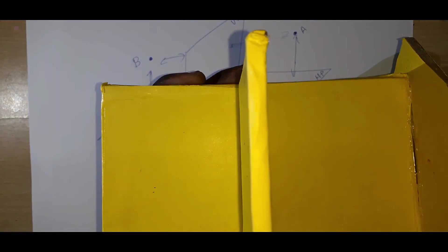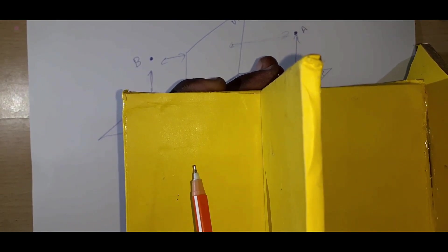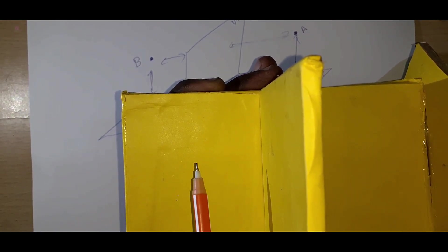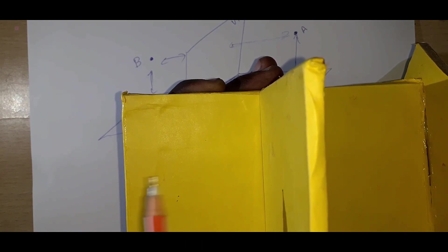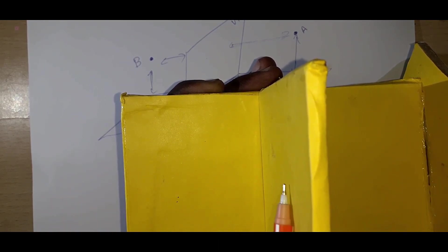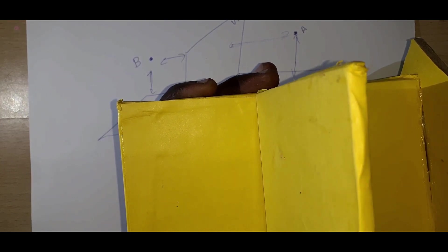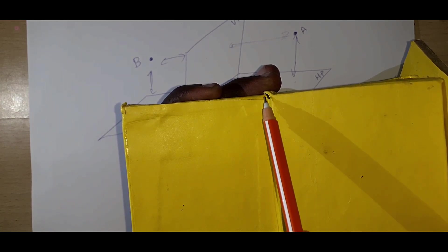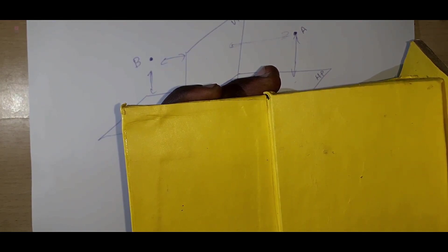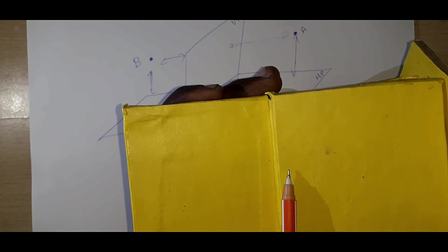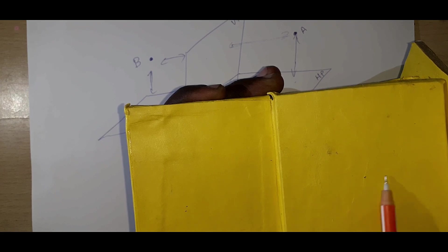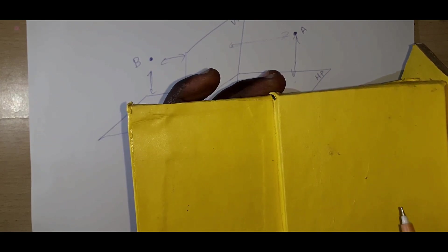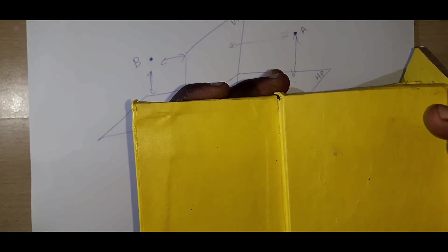The front view portion can be seen here. For the top view, we tilt it 90 degrees clockwise, and the same object gets projected there. There is a line — the XY reference line. From this reference line, how much the object is above and how much it is in front will be plotted. This is how we plot it two-dimensionally on paper.